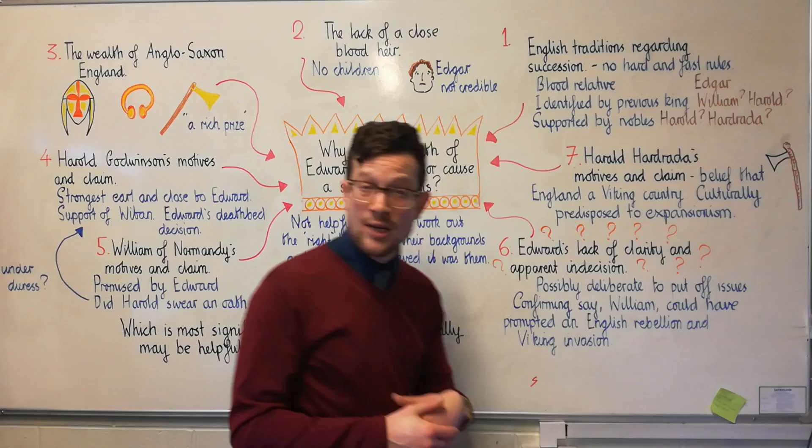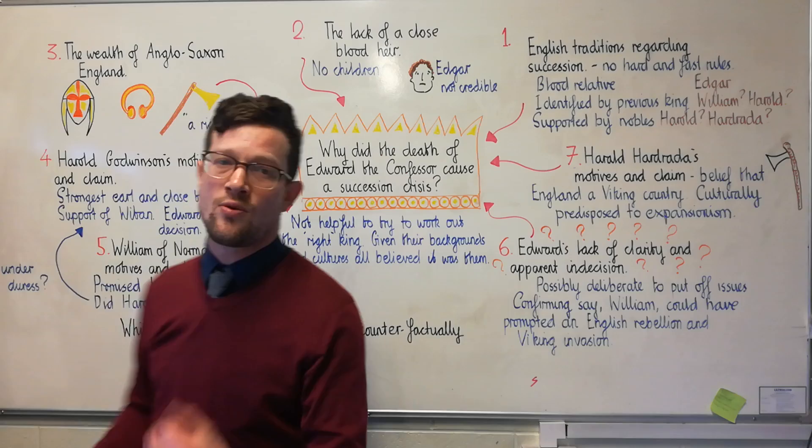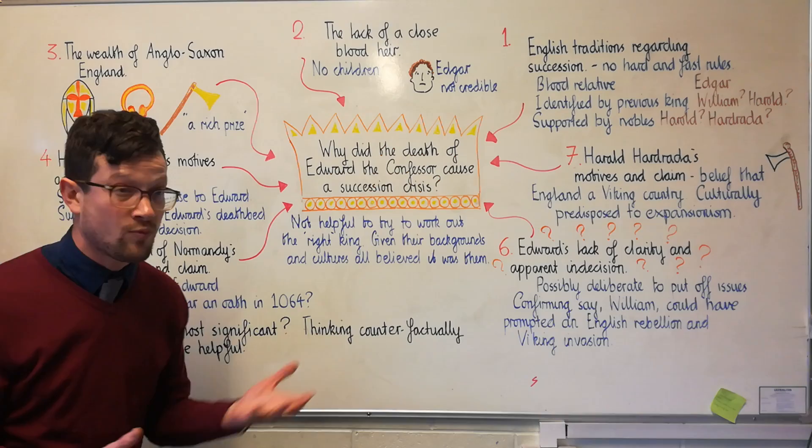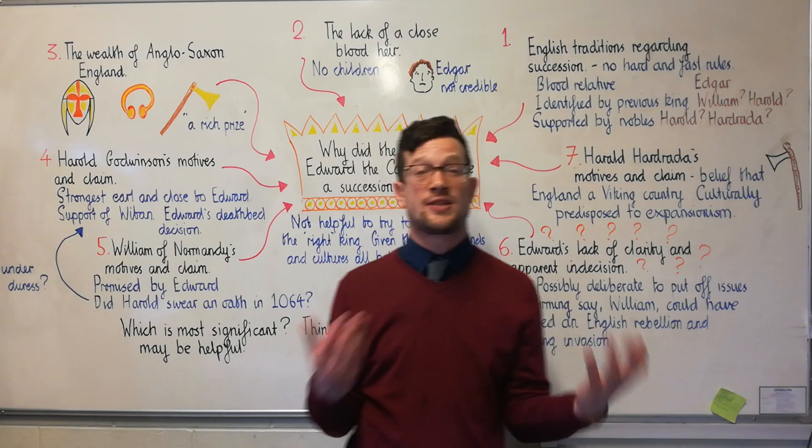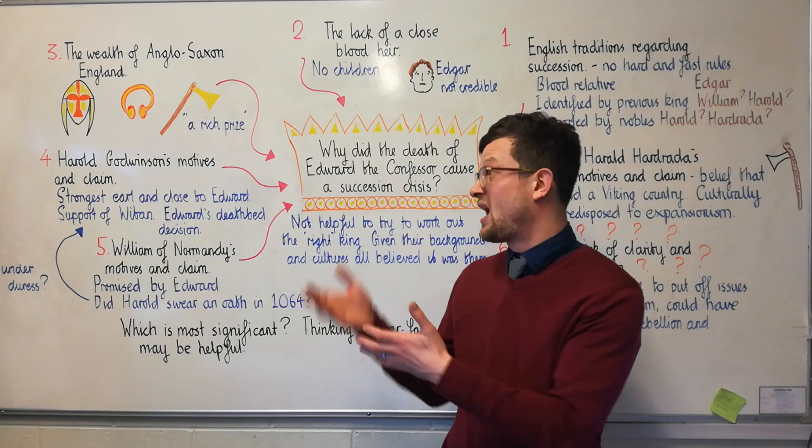The next problem is the lack of a close blood heir. Edward the Confessor died without having any children. His closest relative was a 14-year-old who lived with him in his court, known as Edgar the Ætheling — meaning throne worthy. Edgar was not credible: only 14 years old and having almost no support inside England or outside, he can basically be dismissed from our answer to this question for the time being.